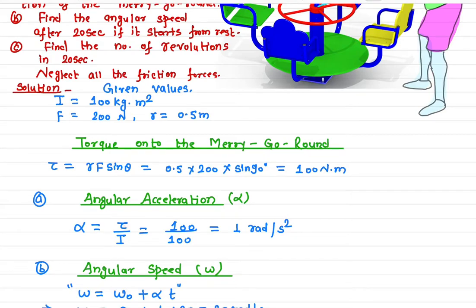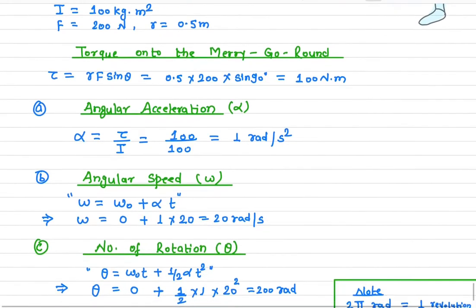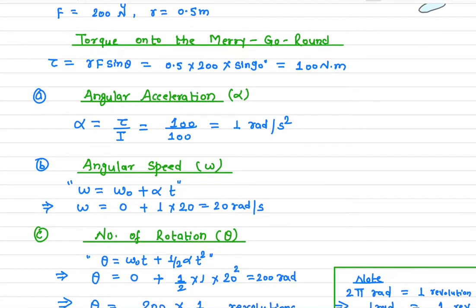We calculate angular acceleration as α = τ/I. The torque is 100 N·m and I is 100 kg·m², so 100 divided by 100 gives us 1 radian per second squared. This is Newton's second law of motion in rotational dynamics, and it's quite straightforward.